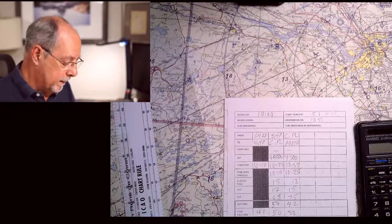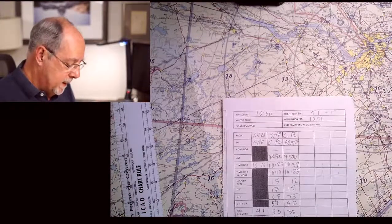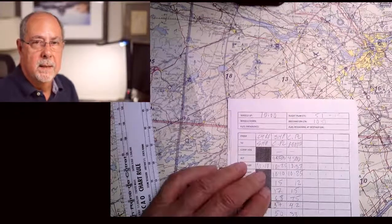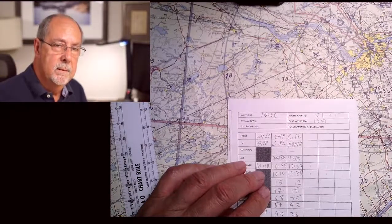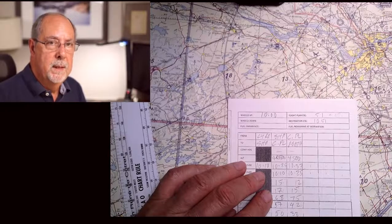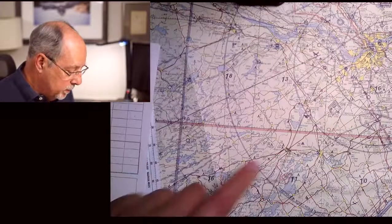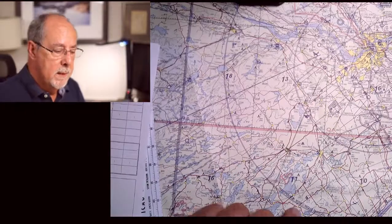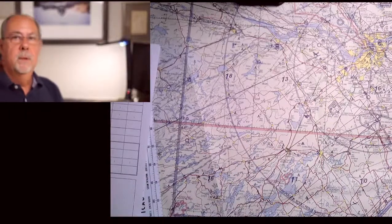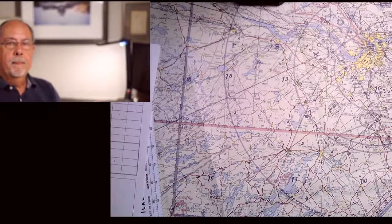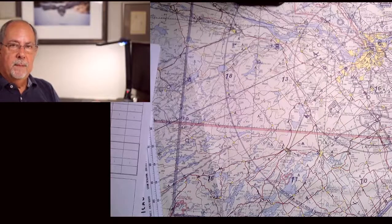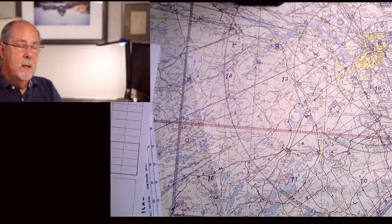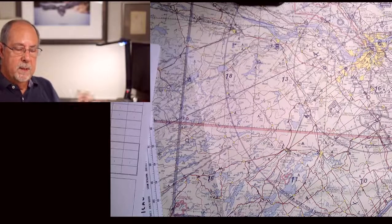So this basically tells us that at that point, we should definitely be calling our friends at flight services to tell them that we're going to be late, unless we may be able to reach Kingston, but I doubt it at this point in time. So that's essentially how we pull together a flight plan leg using a variety of different tools to do it.